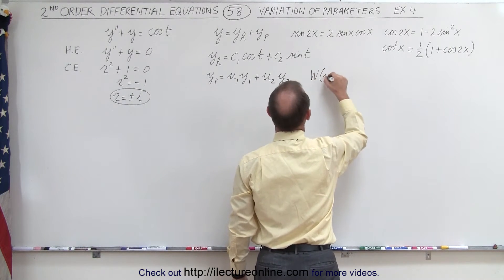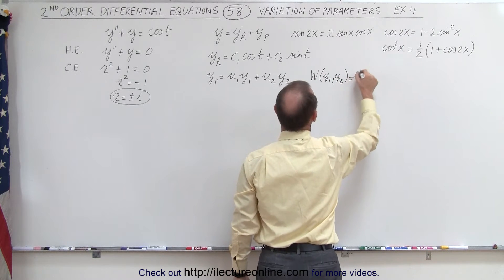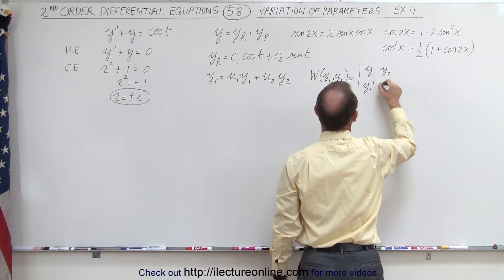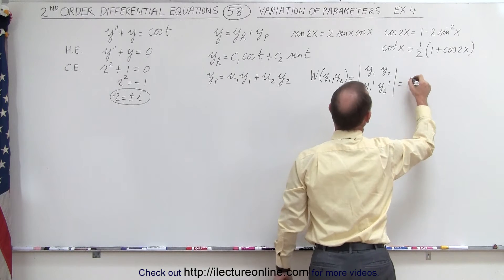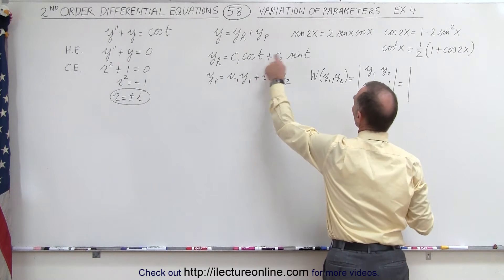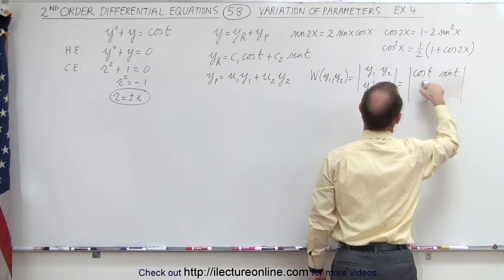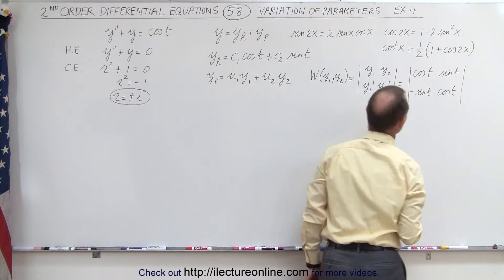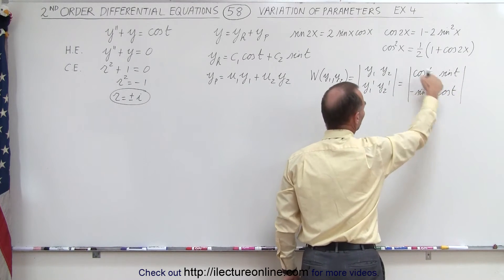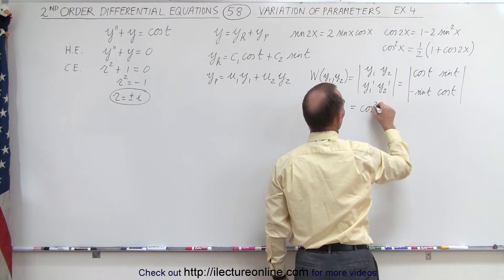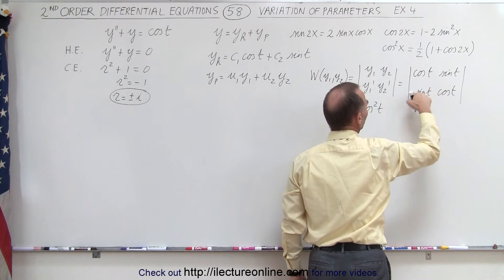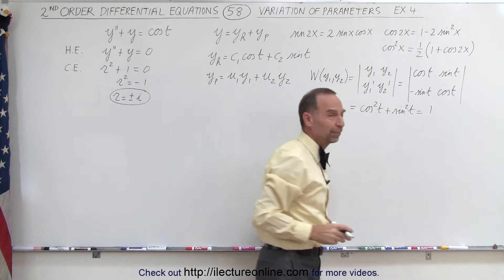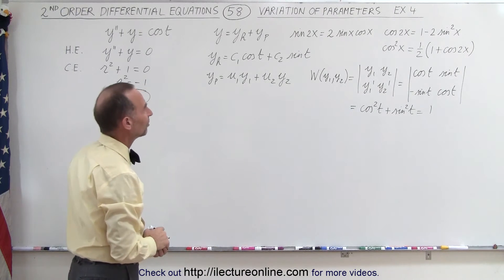The Wronskian of y1 and y2 is equal to the determinant of y1, y2, y1 prime, and y2 prime. y1 and y2 are cosine and sine; the derivative of cosine is negative sine, and the derivative of sine is positive cosine. This gives us cosine squared of t minus the product of those two — with the minus sign it becomes plus sine squared of t — which equals 1. So the Wronskian in this case is equal to 1.